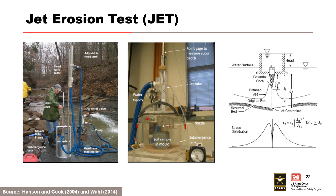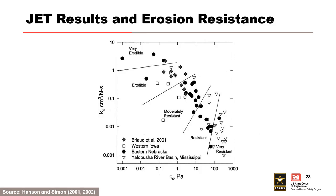Scour of the soil surface beneath the jet is measured over time using a point gauge that passes through the nozzle. Critical shear stress is determined based on equilibrium scour depth. The erodibility coefficient is determined based on the measured scour depth, time, predetermined critical shear stress, and a dimensionless time function. This figure shows the results of a series of jet tests on cohesive streambeds. Erosion resistance categories are a function of both critical shear stress, shown on the x-axis, and the erodibility coefficient, shown on the y-axis. In this figure, you can see that critical shear stress and erodibility coefficient have an inverse relationship: as the critical shear stress increases, the erodibility coefficient decreases.